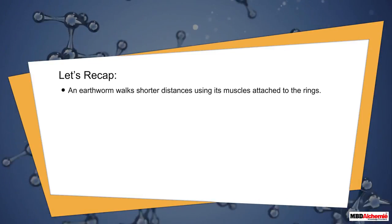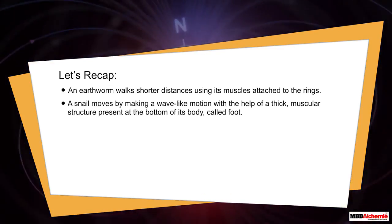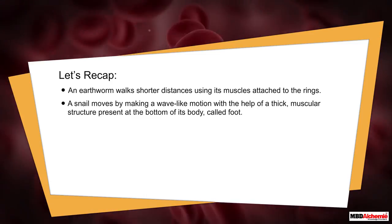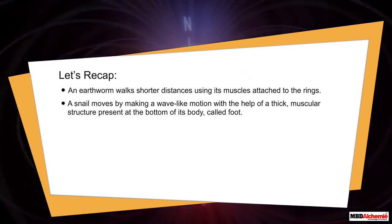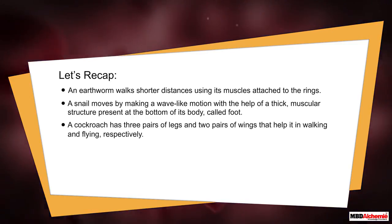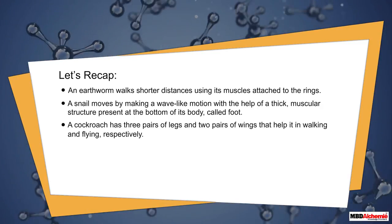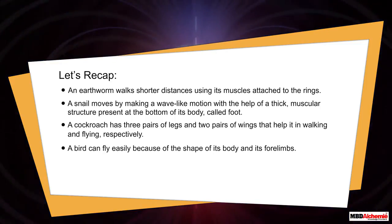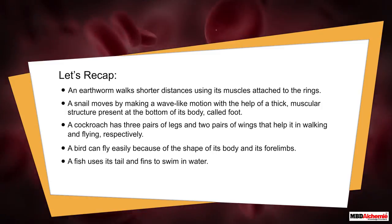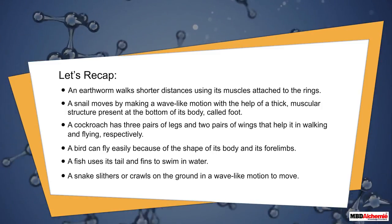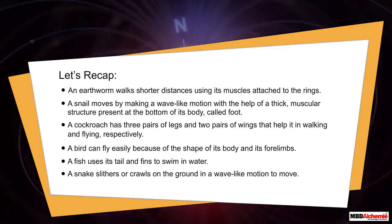A snail moves by making a wave-like motion with the help of a thick muscular structure at the bottom of its body called foot. A cockroach has three pairs of legs and two pairs of wings that help it in walking and flying respectively. A bird can fly easily because of the shape of its body and its forelimbs. A fish uses its tail and fins to swim in water. A snake slithers or crawls on the ground in a wave-like motion to move.